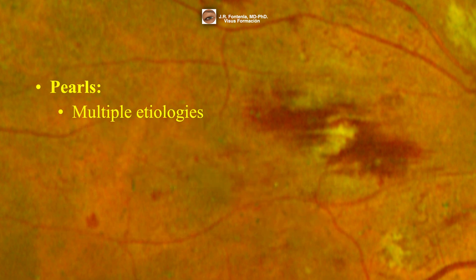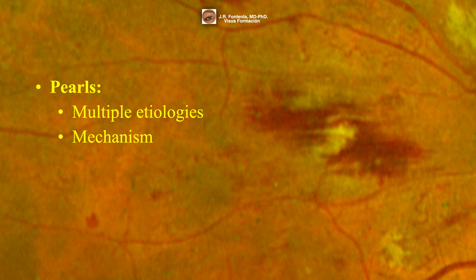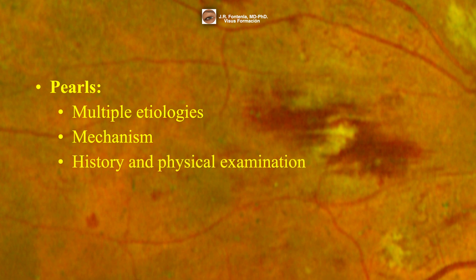Roth spots, although classically associated with infective endocarditis, are a non-specific ophthalmologic finding with multiple etiologies. Retinal vessel rupture with whole blood extravasation and fibrin plaque development at the site of vessel rupture is the mechanism by which Roth spots occur. A thorough history and physical examination are paramount in diagnosing the underlying disease and guiding treatment in patients with Roth spots.